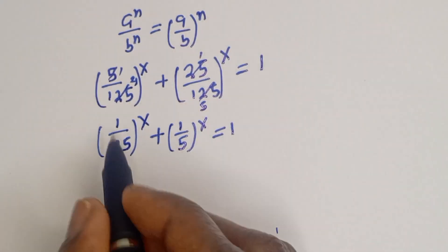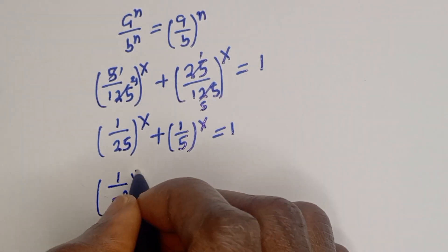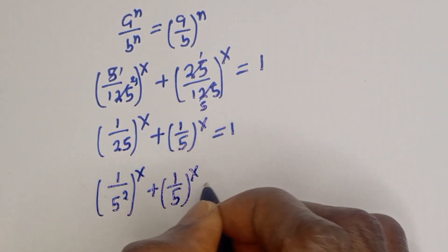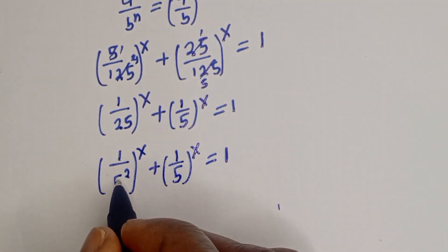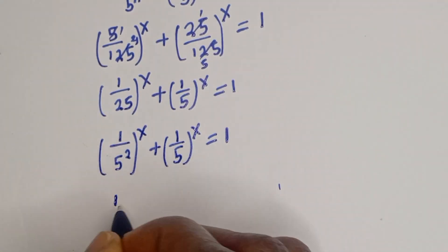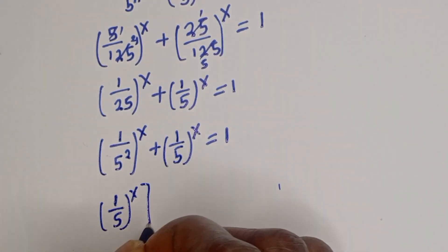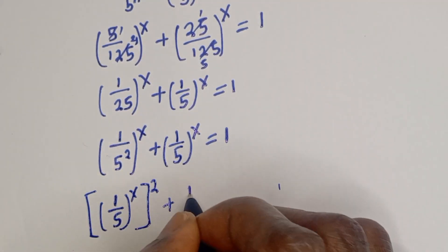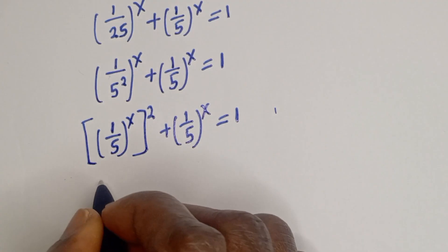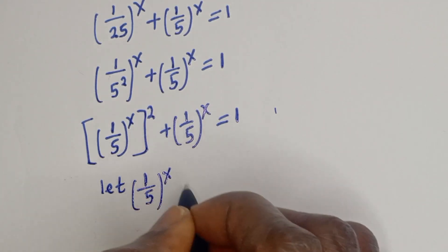This can be written as 1 over 5 squared to the power of x, plus 1 over 5 to the power of x, is equal to 1. Since 1 squared is 1, this becomes (1/5)^(2x) plus (1/5)^x equals 1. Now let y equal (1/5) to the power of x.